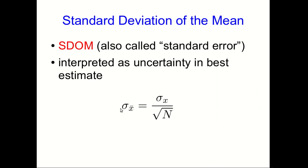And this something else is called the standard deviation of the mean. In statistics, it's often called the standard error. And this is the thing that we interpret as the uncertainty in our best estimate, or in our mean. And all you do is you take your standard deviation and you divide by the square root of your number of measurements.